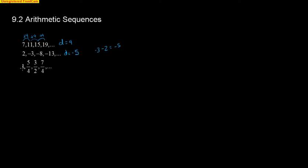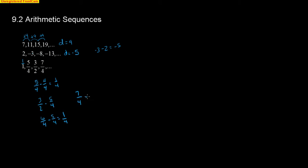When we look at this one, we've got fractions: 1, then it jumps to 5 fourths, 3 halves, 7 fourths. How about we change the 1 to 1 over 1? To get from 1 over 1 to 5 fourths, let's try 5 fourths minus 4 fourths — that's 1 — and you get 1 fourth. Is that the same as 3 halves minus 5 fourths? That's 6 fourths minus 5 fourths, which is 1 fourth. And 7 fourths minus 6 fourths is also 1 fourth. So our common difference for this sequence is 1 fourth.